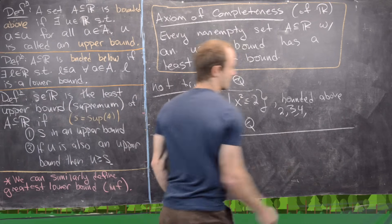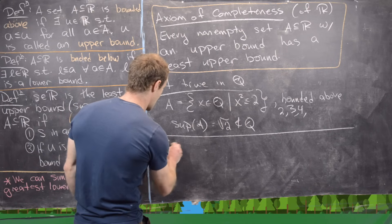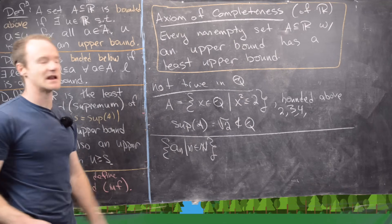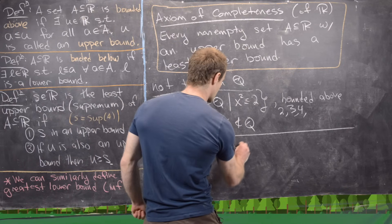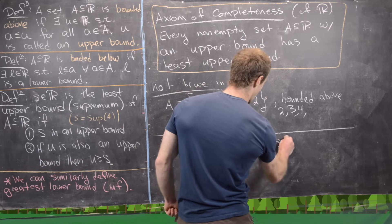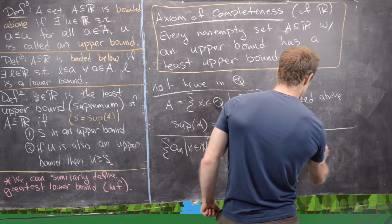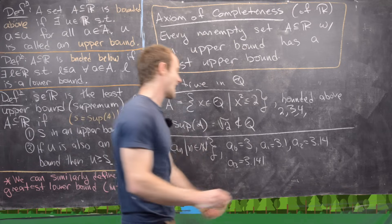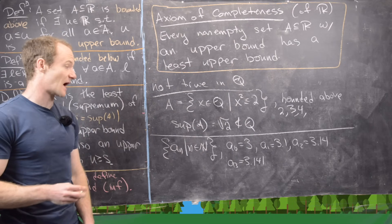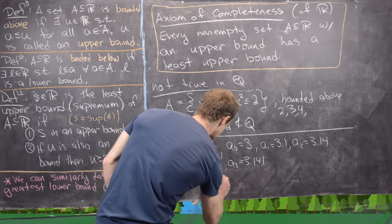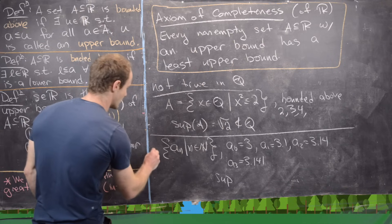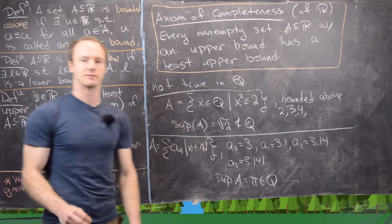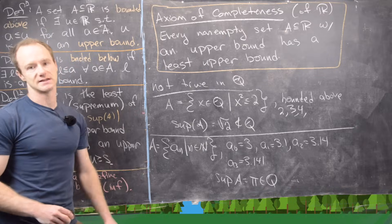For another example, define a sequence where a_0 = 3, a_1 = 3.1, a_2 = 3.14, a_3 = 3.141 — each term adds another decimal digit of pi. The supremum of this set equals pi, but pi is also not a rational number. So the rational numbers are not complete in this sense either.